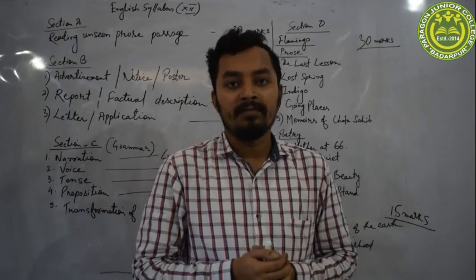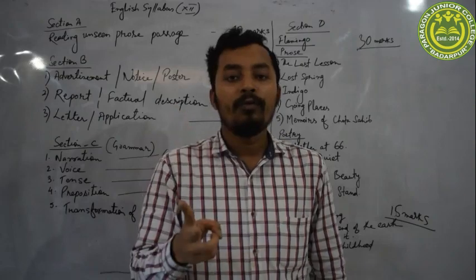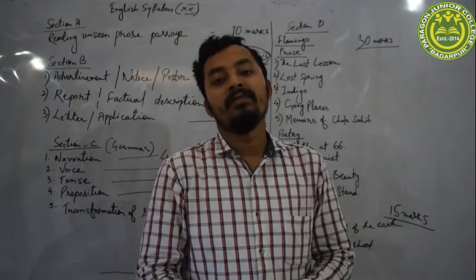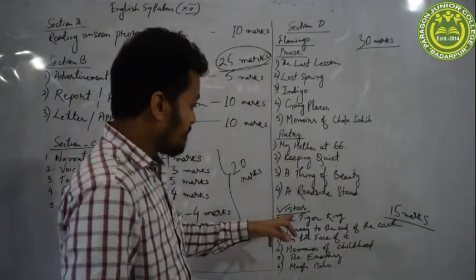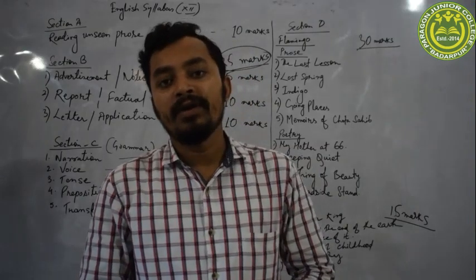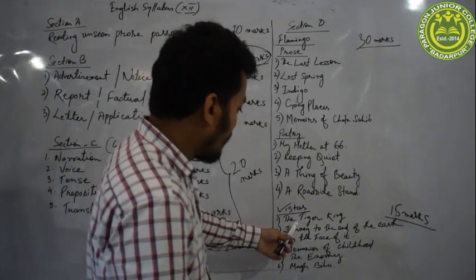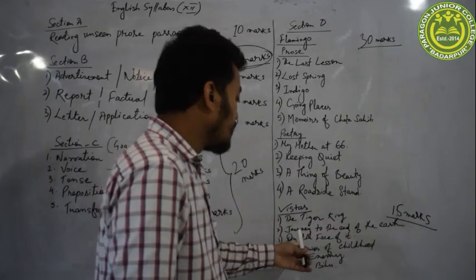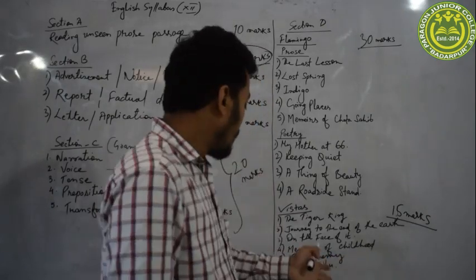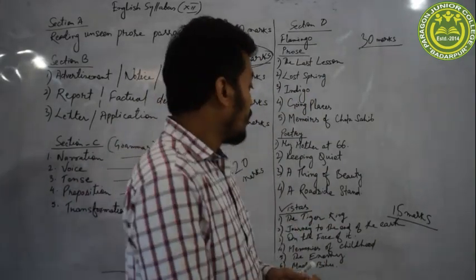One question of 7 marks comes in the exam. Seven plus eight is fifteen — for 8 marks, four questions will be there, each question will have 2 marks: 8 plus 7 is 15 marks. The six topics from Vistas are: 'The Tiger King,' 'Journey to the End of the Earth,' 'On the Face of It,' 'Memories of Childhood,' 'The Enemy,' and 'Should Wizard Hit Mommy.' These are the six chapters in the syllabus from the book Vistas. So this is the total syllabus of class 12.